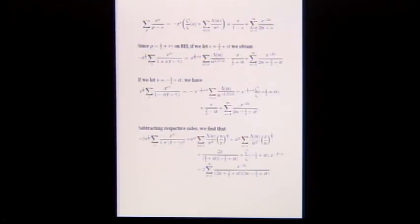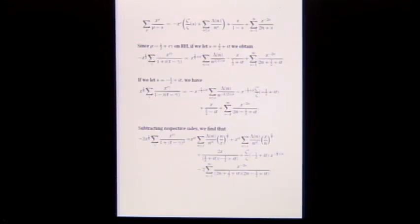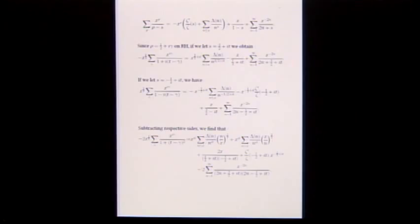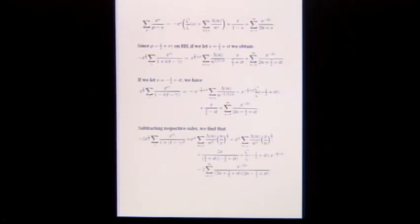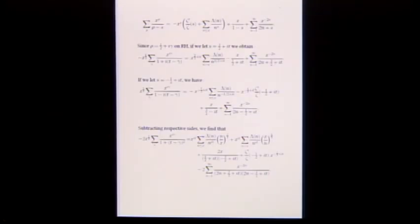This term can be ignored throughout these slides because it plays absolutely no role — it's tiny, since x to a negative power is small for large x. With s equal to three-halves plus i t, the first term can be represented as an infinite series minus the sum of lambda n over n to the s. The first part cancels and I'm left with the tail.